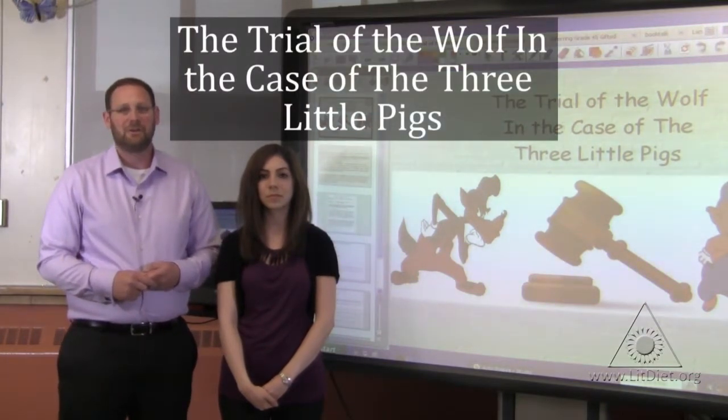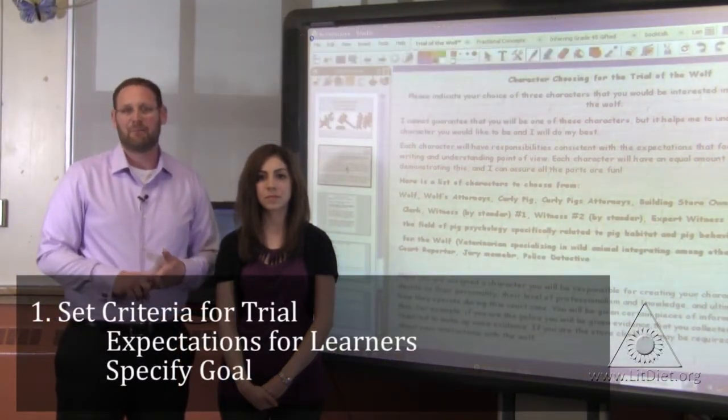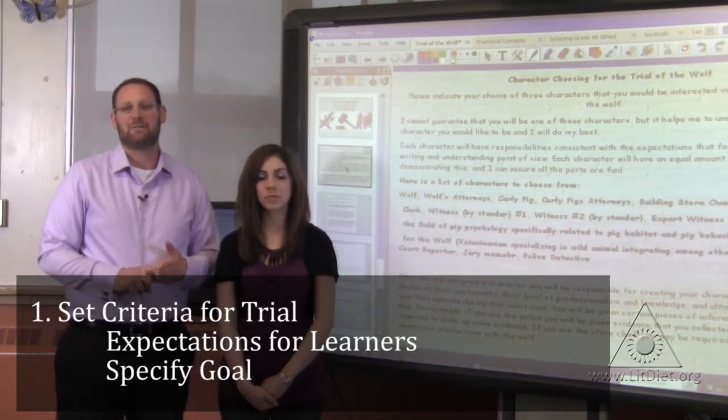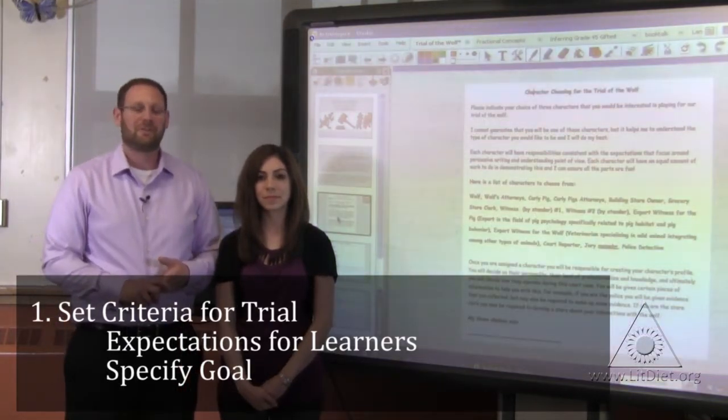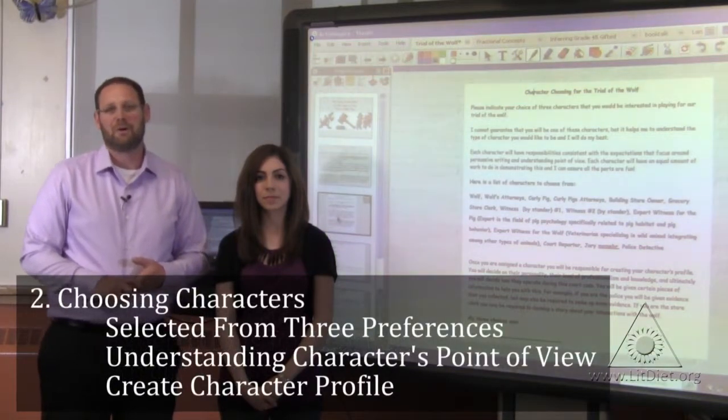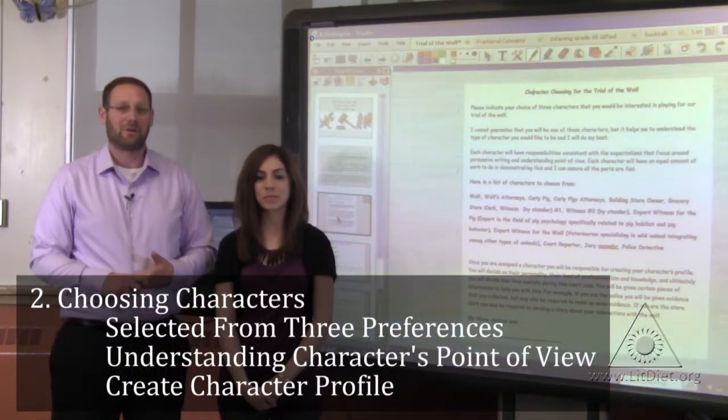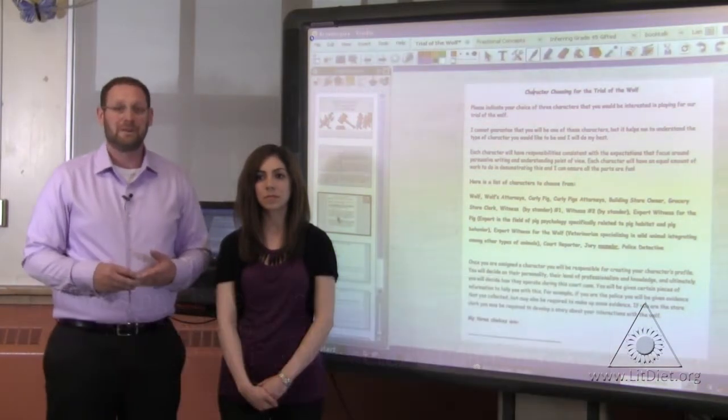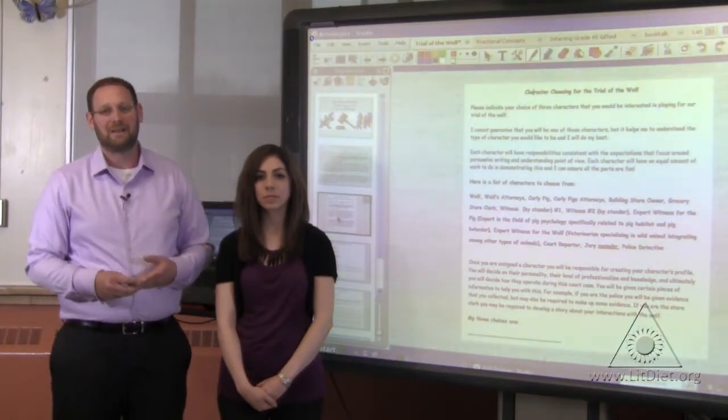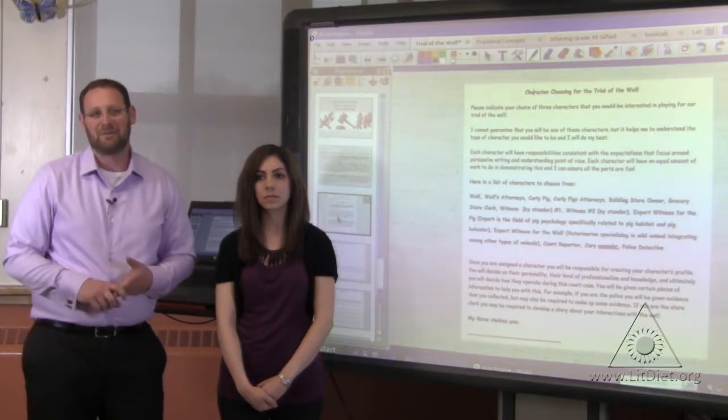The first thing we do is set criteria for how the trial is going to play out and what the expectations are for each learner and what our goals are. The second thing we do is start to think about which character we want to be. I can't guarantee that every student will get the character of choice, so we ask each student to choose three different characters they would like to be. In doing this, we can hopefully get them to be one of the characters of their choice.